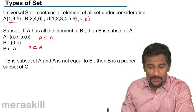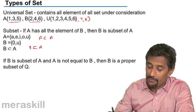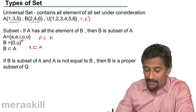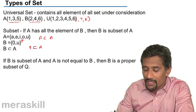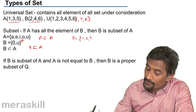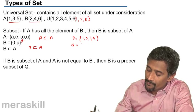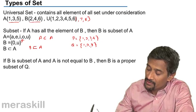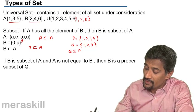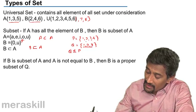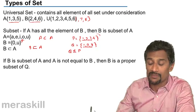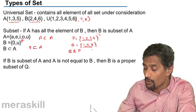A proper subset means: if B is a subset of A but B and A are not equal, which means A has at least one element more than B. For example, B is {1, 2, 3, 4} and Q is {1, 2, 3}, then Q is a proper subset of B — meaning B contains all the elements in Q plus at least one more element.